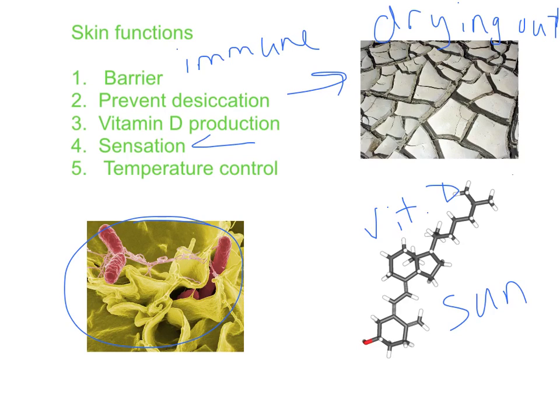The skin is also involved in sensation — things like pain, temperature, and pressure — all involving touch, creating a nervous system interaction. The skin is important for body temperature control as well, which is another nervous system interaction. The hypothalamus monitors your body temperature levels, and the skin will help respond to that, eliciting responses from the nervous system based on whether your temperature is too high or too low.